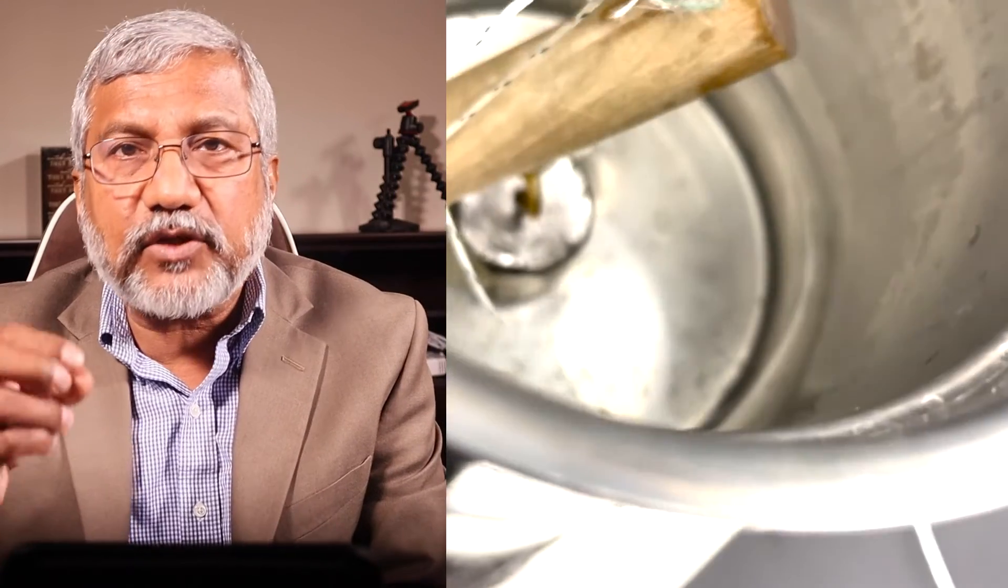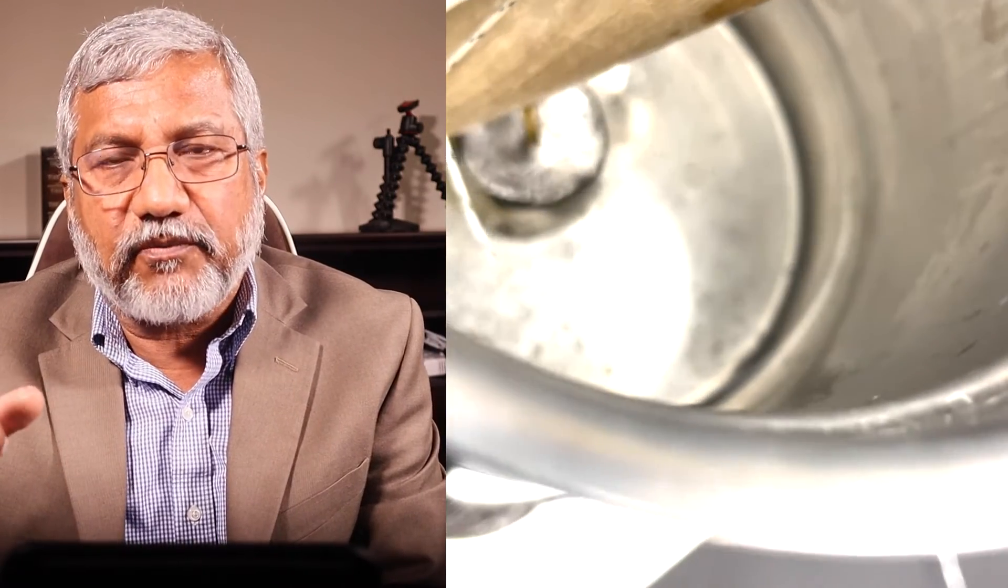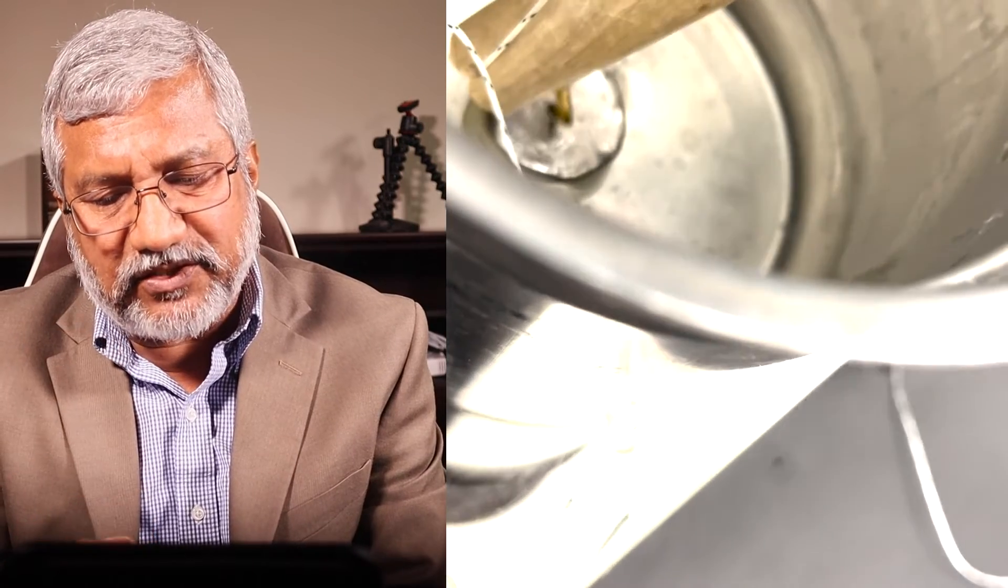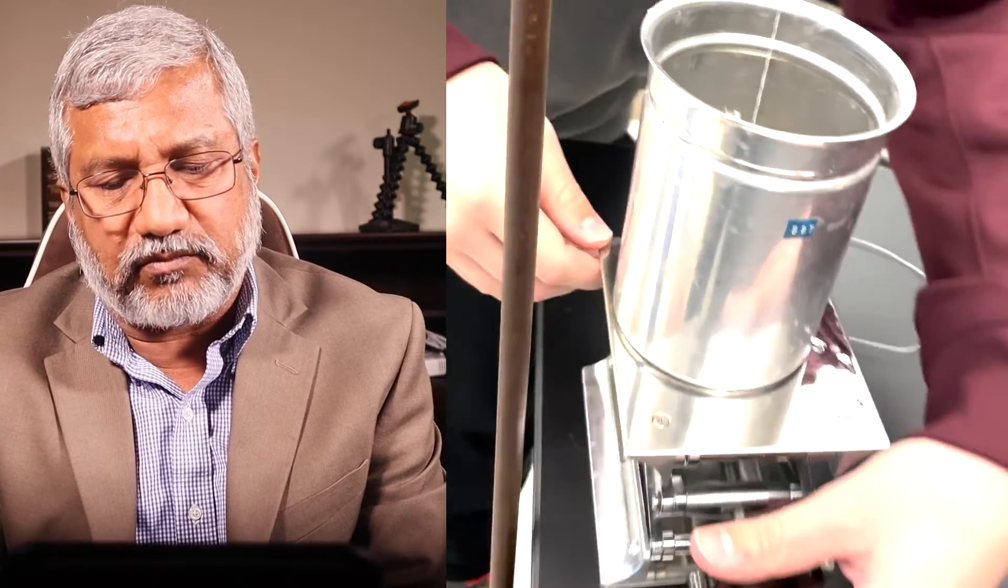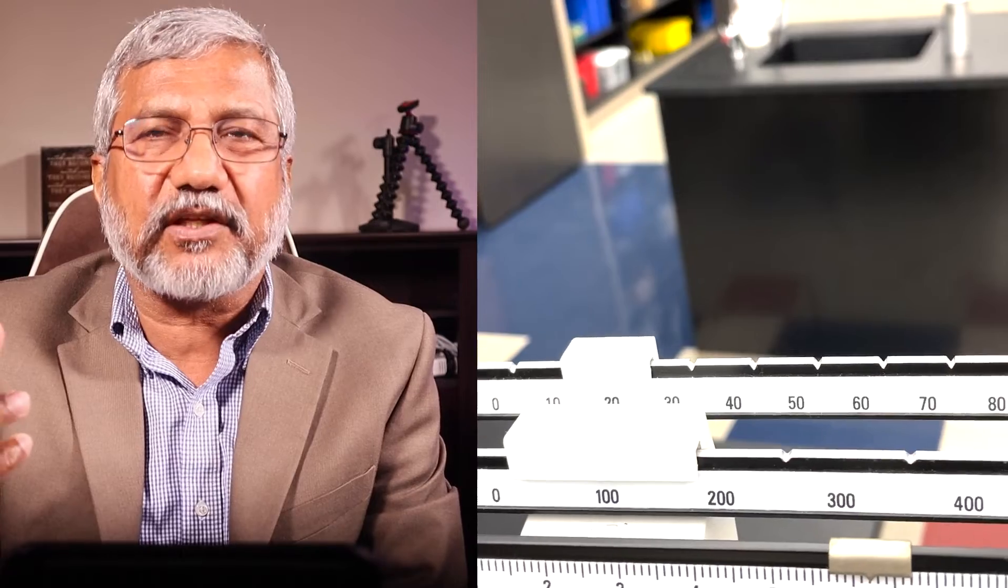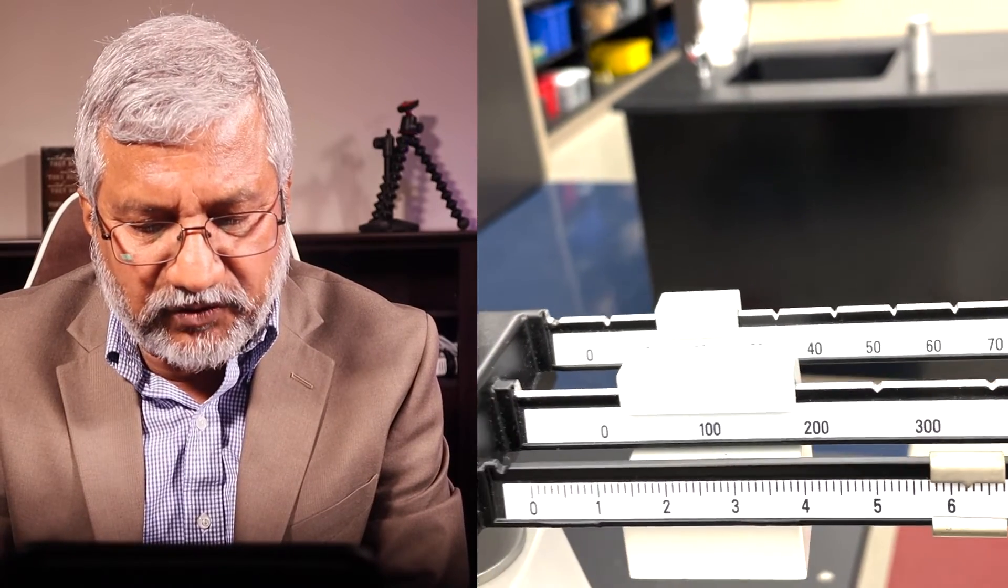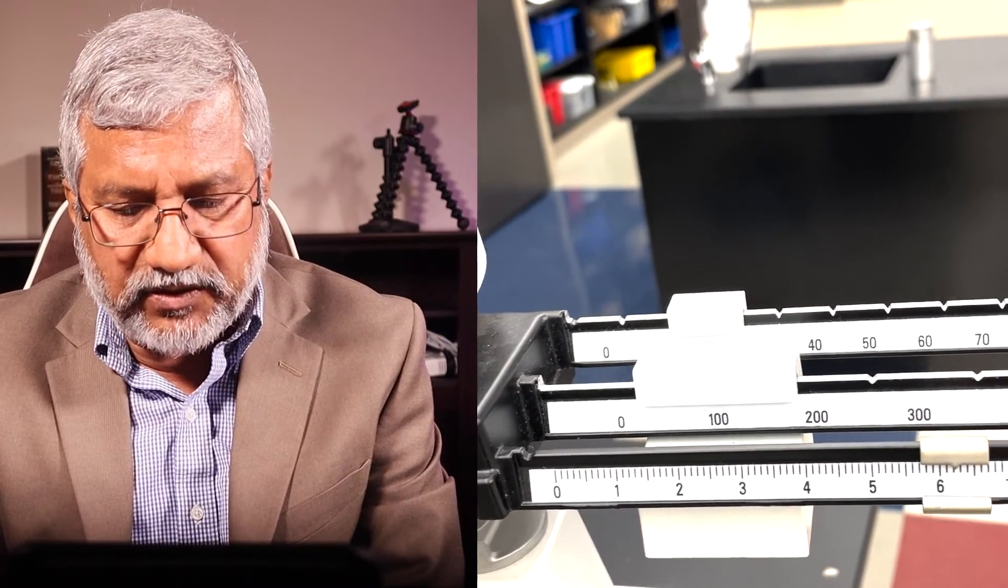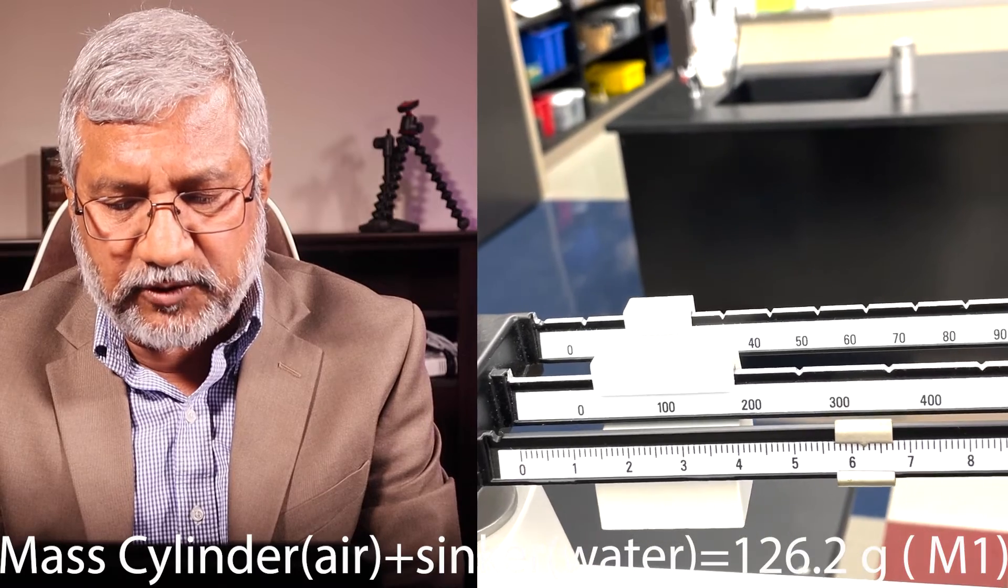Next, the wooden cylinder is in air but the sinker is in water. We should make sure that the sinker is not touching the base. It's only the wooden cylinder in air but the sinker—it's called the sinker because it's going to make it sink down. So that's how much it is: 126.2 grams. 126.2 grams: wooden cylinder in air, sinker in water.